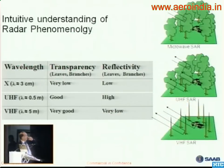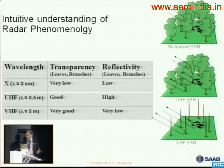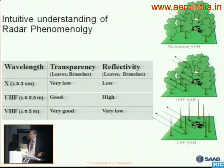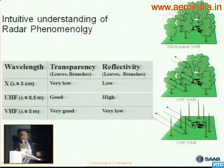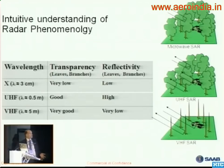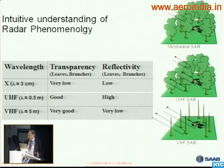At low frequency, the principle is that if you illuminate the ground with a certain wavelength, the response from the ground will be from objects that are of the size of the wavelength or larger. So if you use a microwave SAR with centimeter wavelengths, you get response from very small things like leaves, fine roughness, and small gravel. Natural objects form corner reflectors which respond strongly, so the response can be very complex.